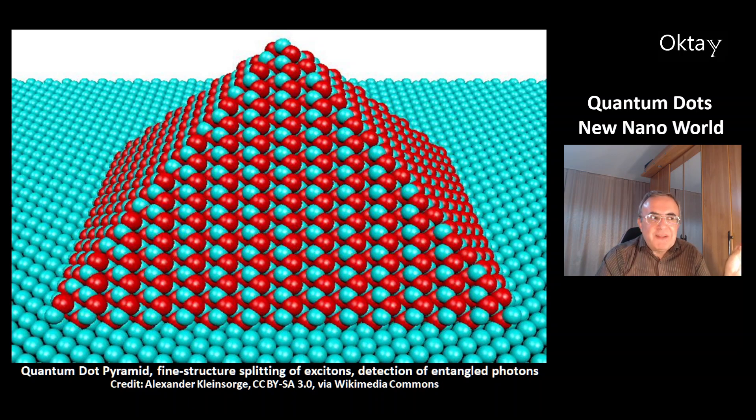This is a picture of a quantum dot pyramid. This allows a fine structure splitting of excitons. Excitons are pairs of electrons and electron holes. And this allows the detection of entangled photons. Since the entanglement is another quantum mechanics phenomena. Entangled particles are a group of particles. And their properties are dependent on each other. And what's fascinating is even if one of these particles were at the other end of a galaxy, this entanglement still stays. And this is a really fascinating phenomenon.